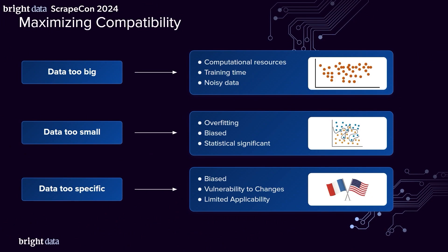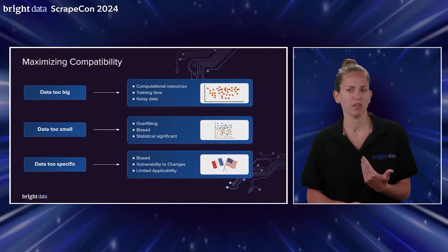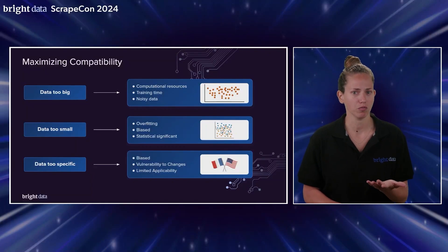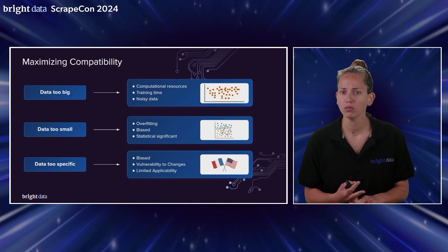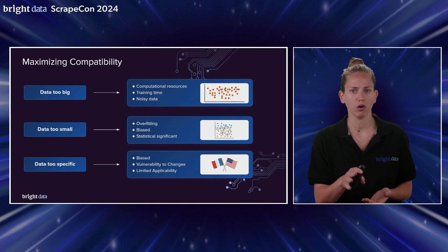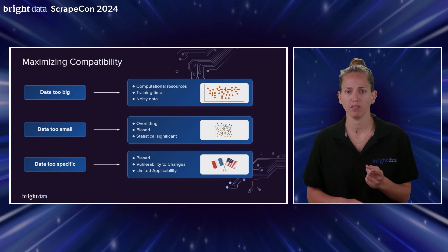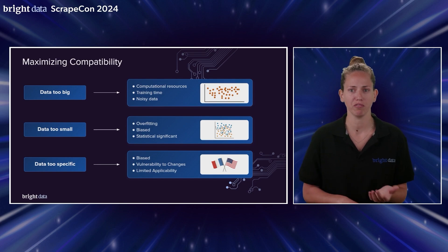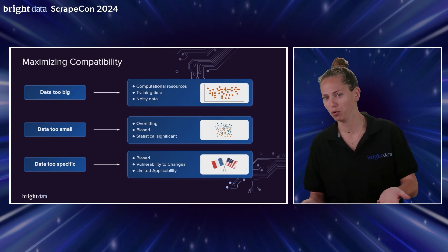Now, let's say we have a good size of data, but it's just from one country or collected just from women. It will cause our model to be very biased towards the training population and will have very limited application. Think of the cultural differences between countries like France and the United States — they have different food, different sports, they like different movies. What would happen if we trained our model on data from the United States and then tried to implement it in France? It would probably keep suggesting baseball and hot dogs instead of football and wine.